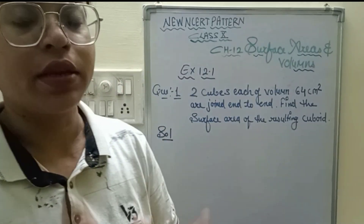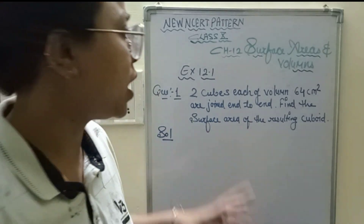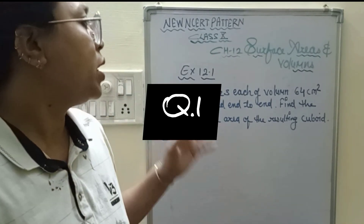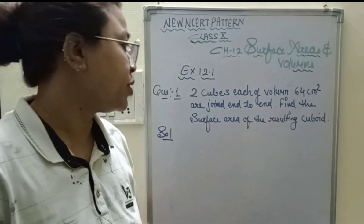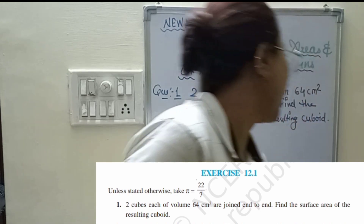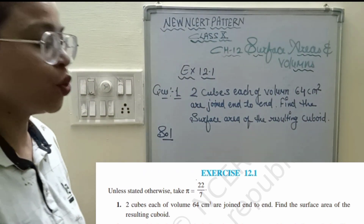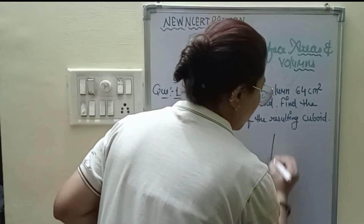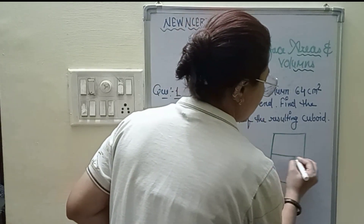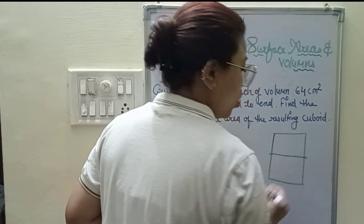Today we start Exercise 12.1. Question number one: two cubes, each of volume 64 cubic centimeters, are joined end to end. Find the surface area of the resulting cuboid. Suppose these are the 2 cubes joined end to end.